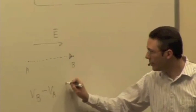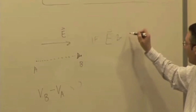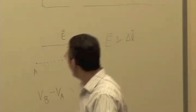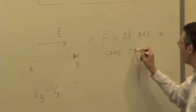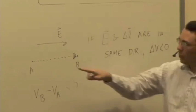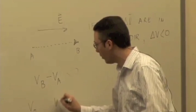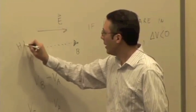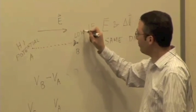That's negative, right? This is less than zero because we said that if the electric field and the delta L are in the same direction, then delta V is less than zero. So if that's true, which end is at the higher potential? Which is bigger — is VB bigger or VA bigger? VA is bigger, right? So this must be the high potential, and this must be the low potential.